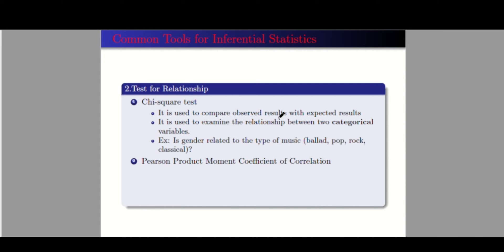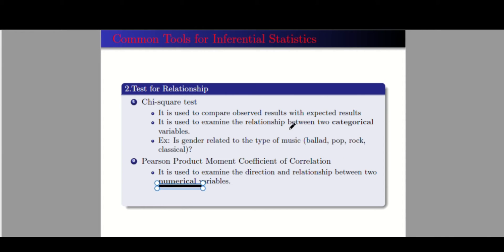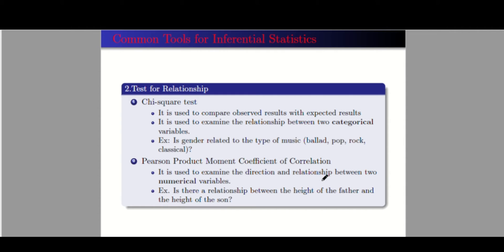The second tool is the Pearson Product Moment Coefficient of Correlation, or Pearson correlation for short. It is used to examine the direction and relationship between two numerical variables. You may use Pearson correlation when you want to get numerical variables from each of your respondents. For example, is there a relationship between the height of a father and the height of a son? You have two numerical variables: the height of the father and the height of the son.